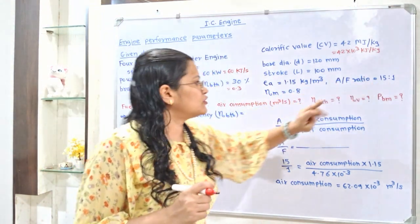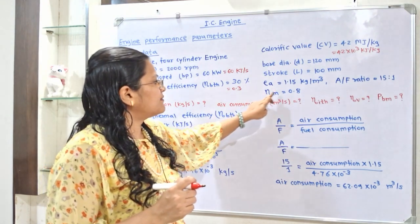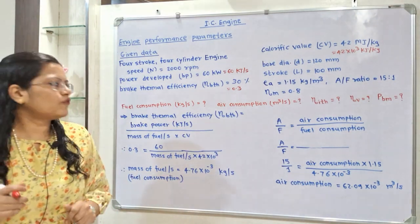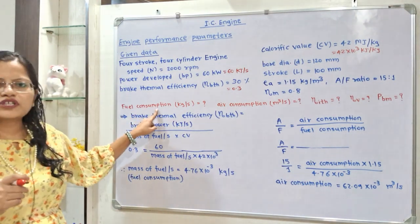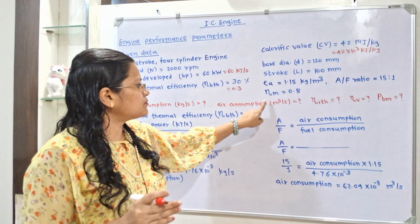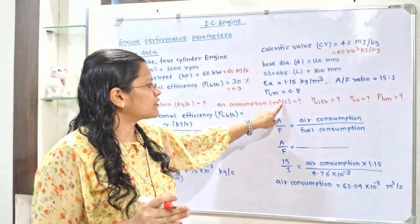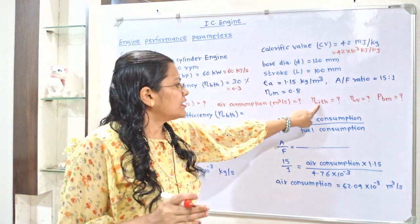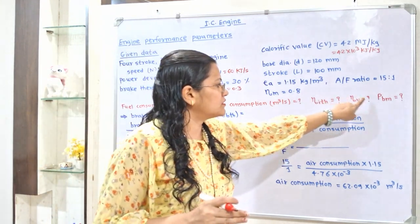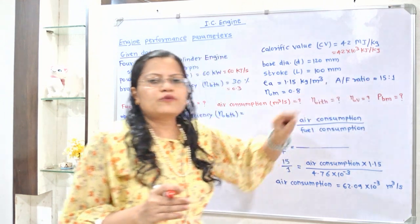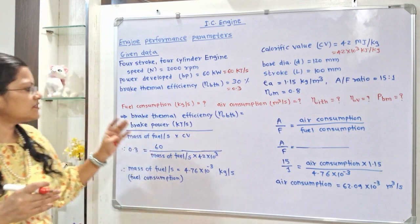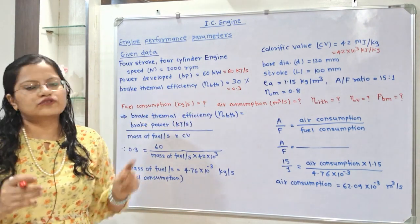Air-fuel ratio is 15:1 and mechanical efficiency is 0.8. We have to find fuel consumption in kg/s, air consumption in m³/s, indicated thermal efficiency, volumetric efficiency, brake mean effective pressure, and mean piston speed.